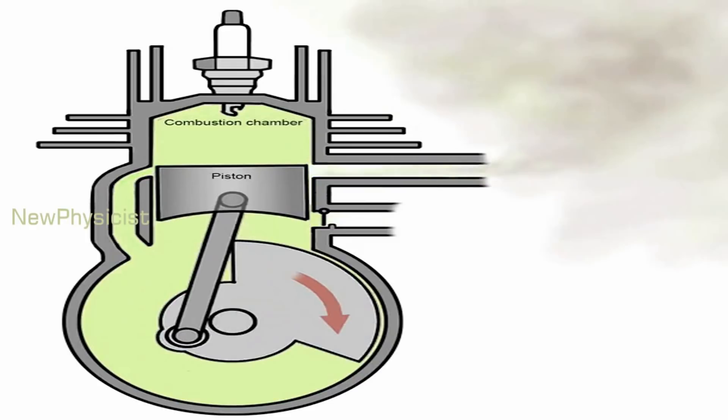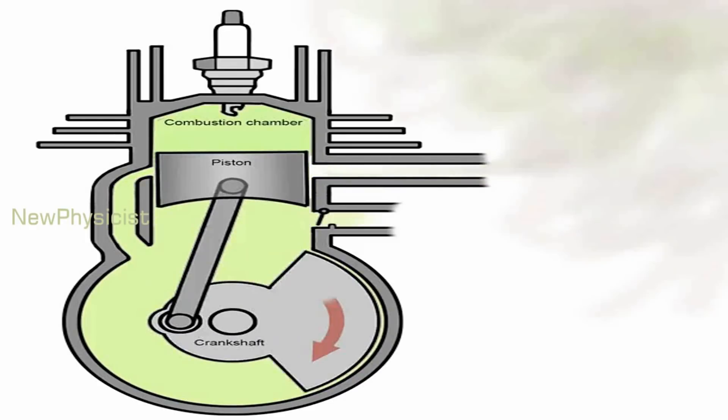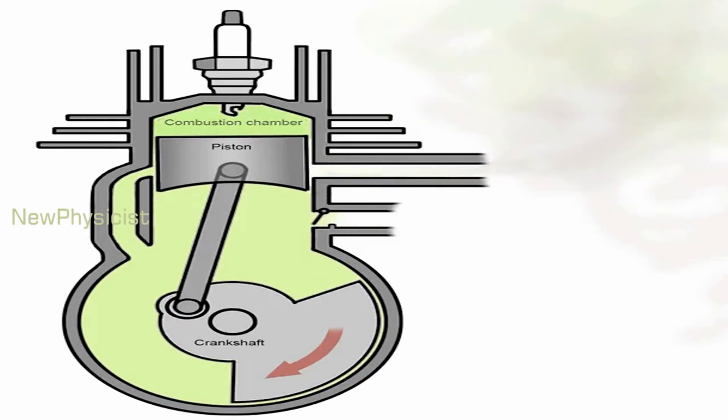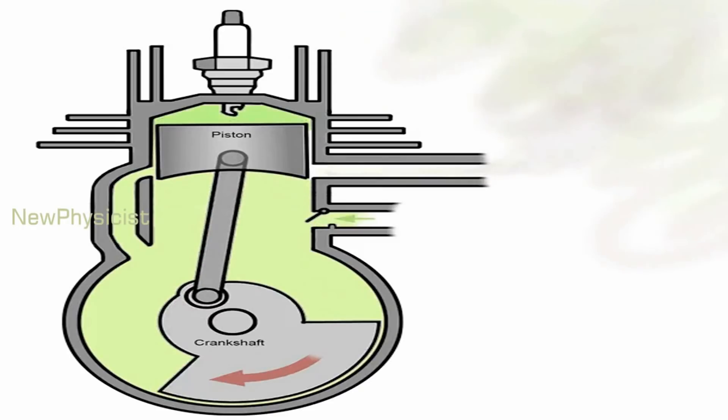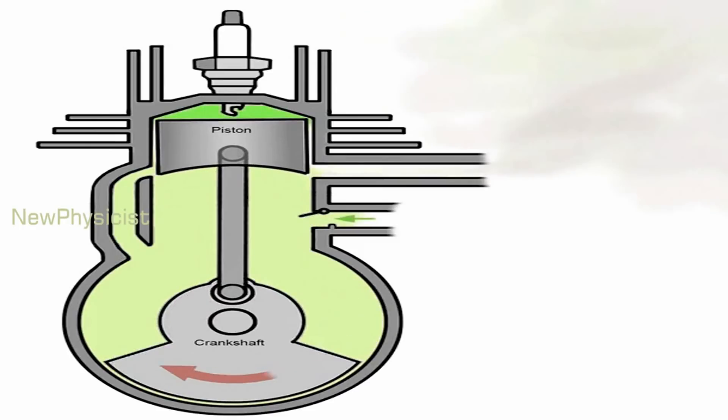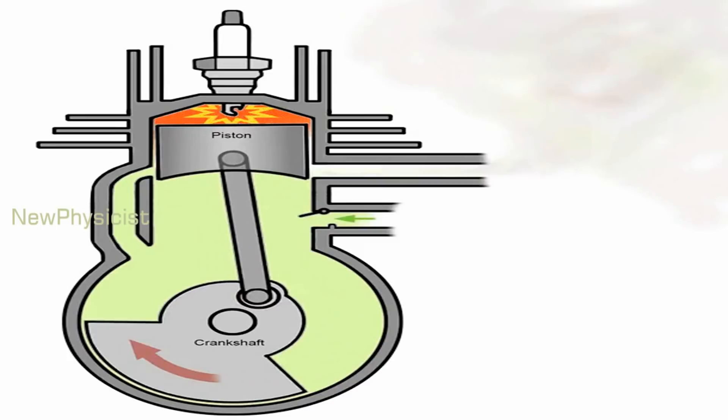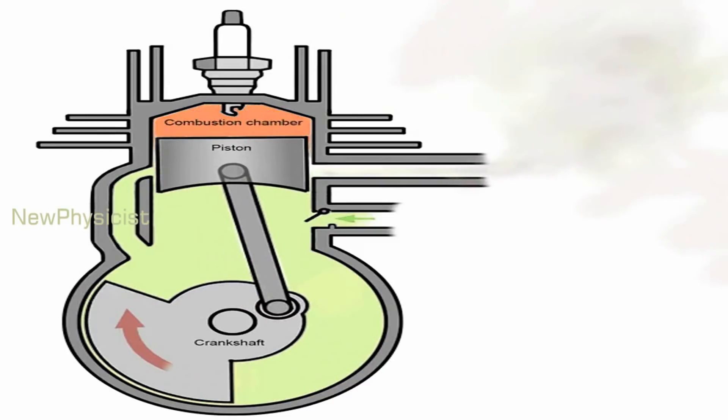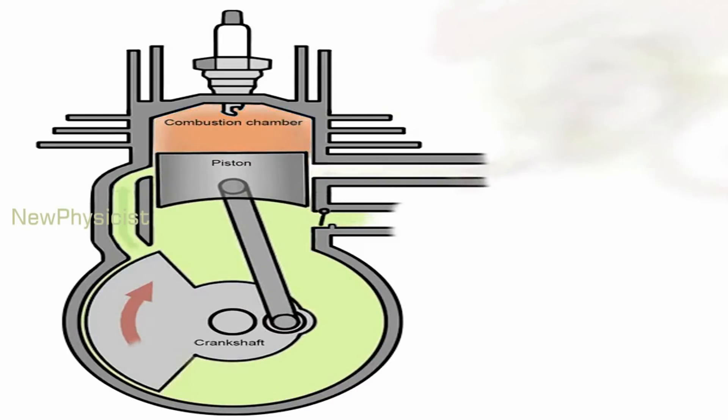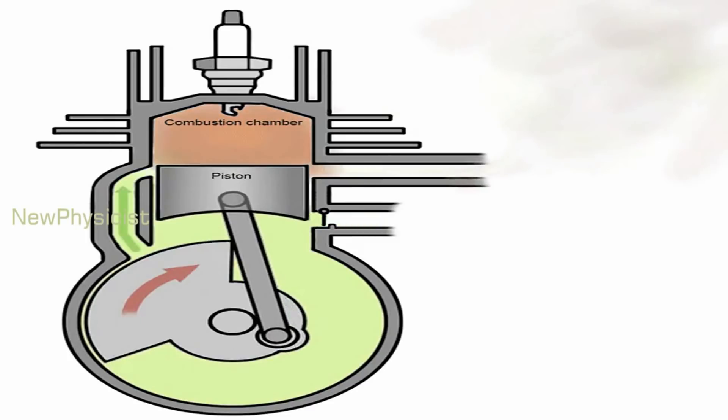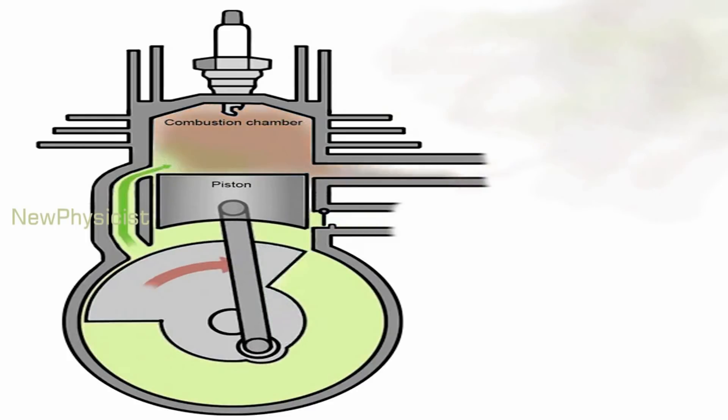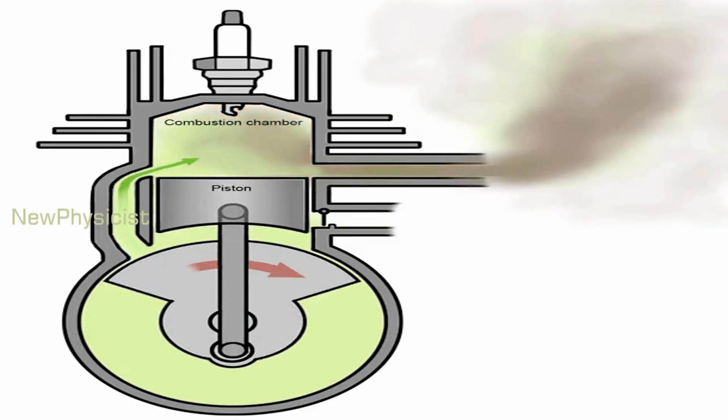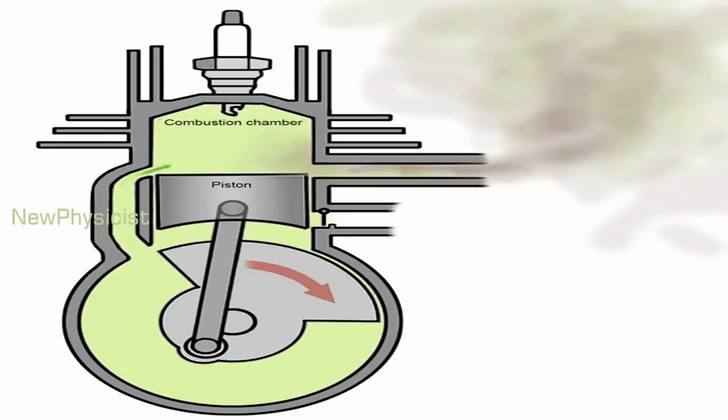As the piston nears top dead center, a spark fires the compressed mixture. As in a four-stroke, the mixture burns and its chemical energy becomes heat energy, raising the pressure of the burnt mixture to hundreds of PSI. This pressure drives the piston down the power stroke, rotating the crankshaft. As the piston continues down, it begins to expose an exhaust port in the cylinder wall.